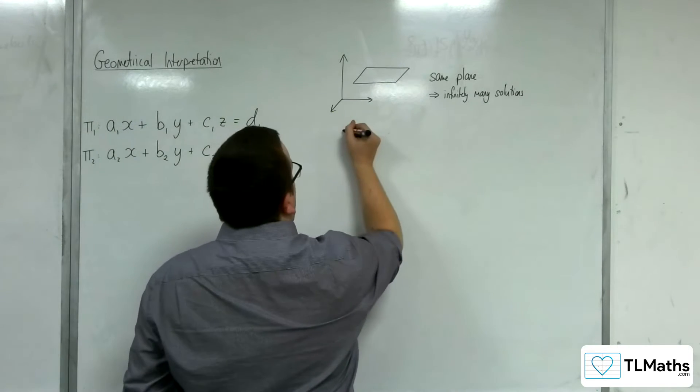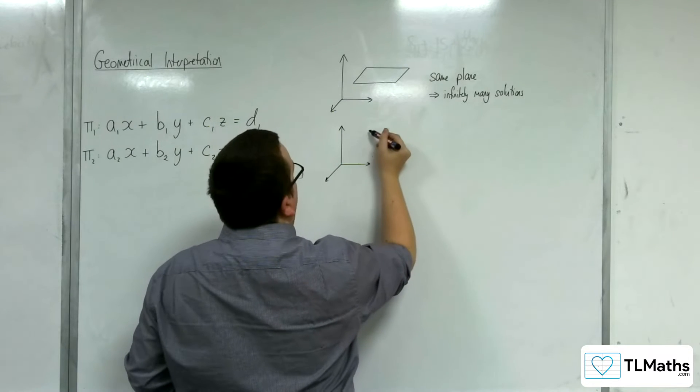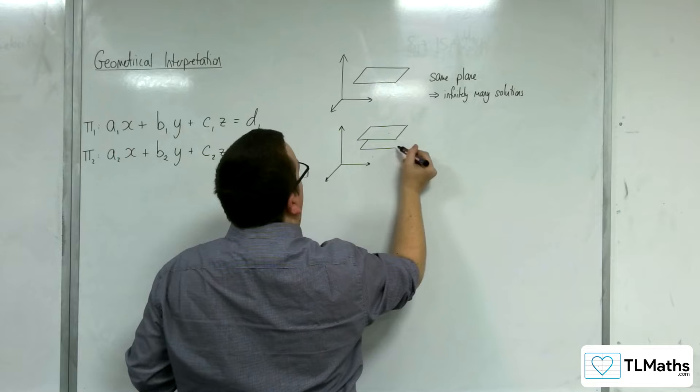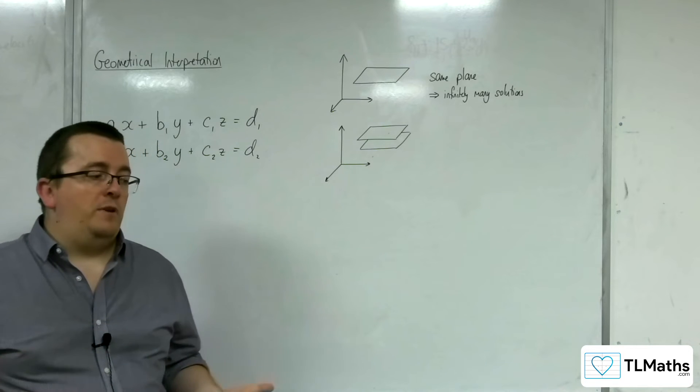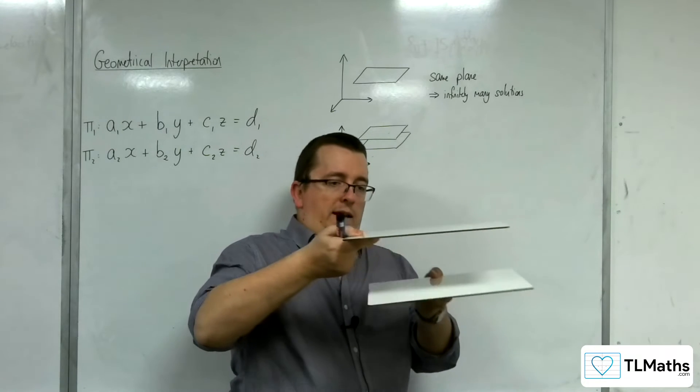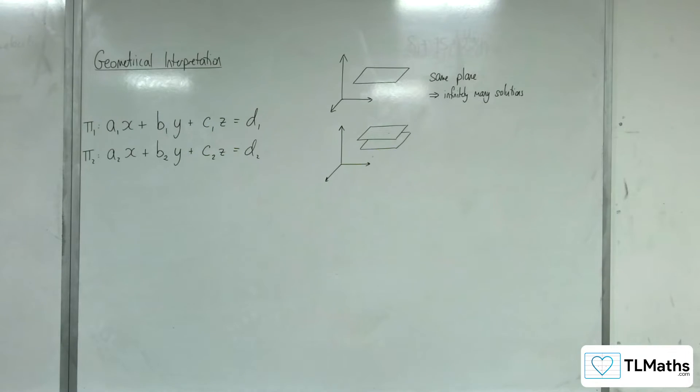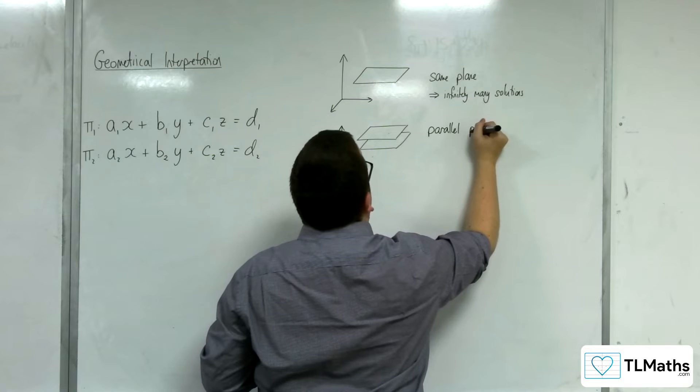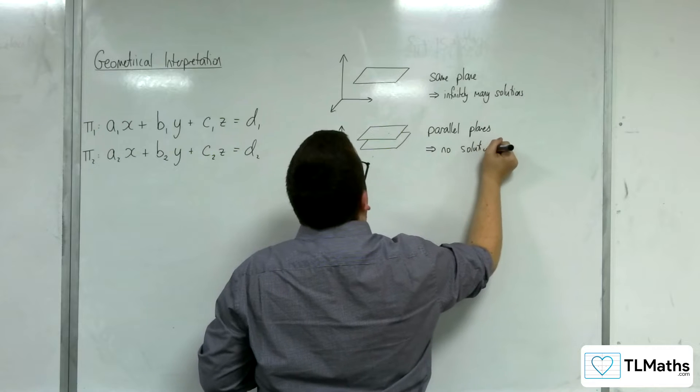Then if you have two distinct planes—now we know they are different from one another—they could still be a situation where they are parallel planes, but these don't intersect. For example, two perfectly flat planes that never intersect one another. So they are parallel planes, and then you've got no solutions because they never cross one another.